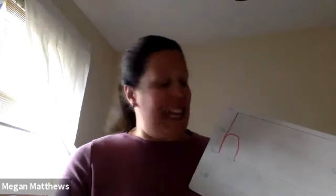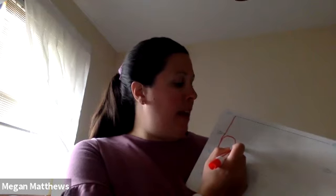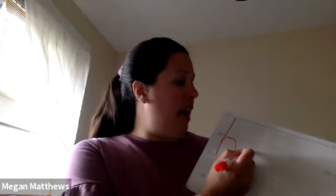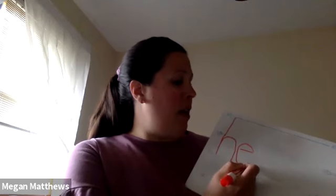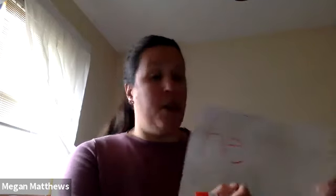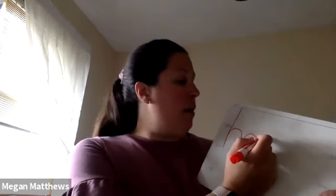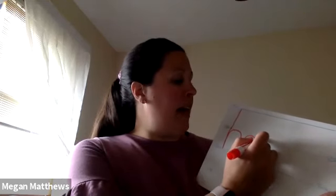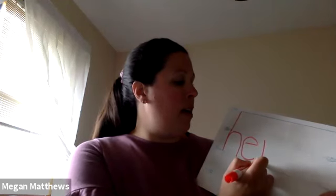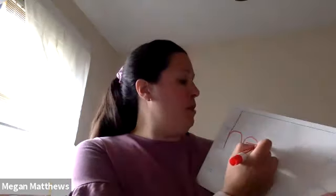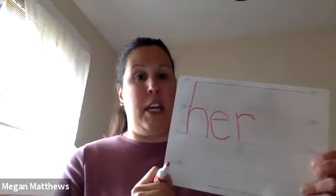Next letter is E. Remember, we start just below the plain line. I like to say we hit the ball out, we fly up to the plain line, we come around, and we end just above the grass line. H, E. Now we make an R. An R is a plain line letter — straight down to the grass line. Then we trace right back up to the plain line, and we come and bump it over. H, E, R.